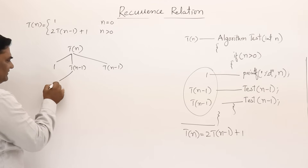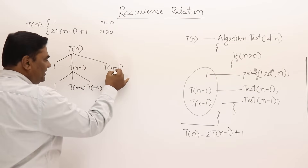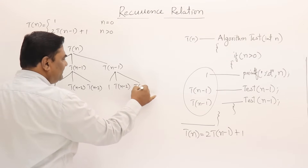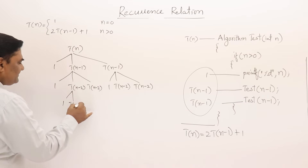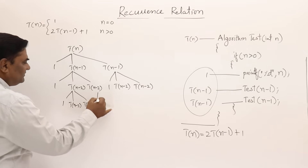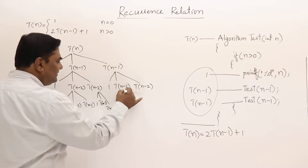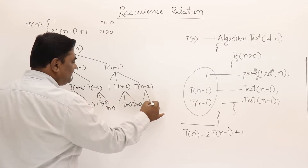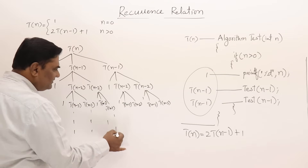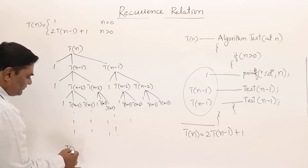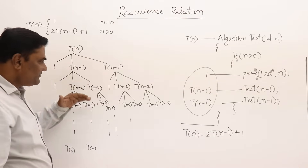Then those nodes each take one unit of time and call themselves for n−2 and n−2. These also take one unit of time, giving T(n−2) and T(n−2). In the next level, each node takes one unit of time giving T(n−3) branches. This continues until they are reaching T(0), because n=0 is the smallest value, so we keep reducing until zero.